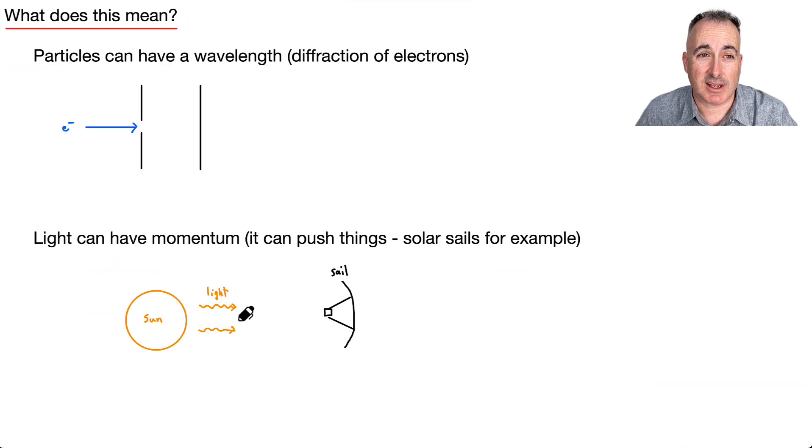So what does it mean that particles can have both things? Well, particles can have a wavelength, which is really weird. Electrons will actually diffract. So not just light will. Electrons will actually make this weird diffraction pattern where it kind of spreads out.